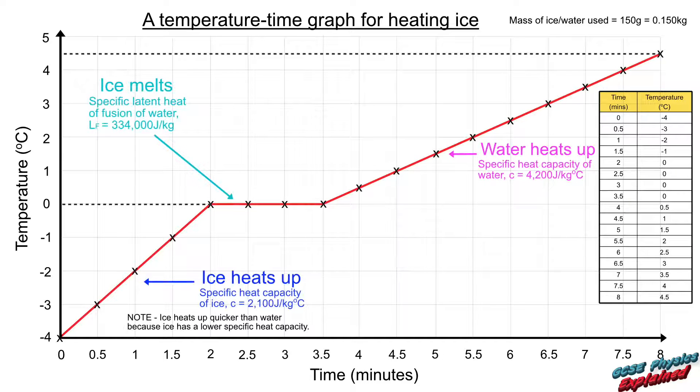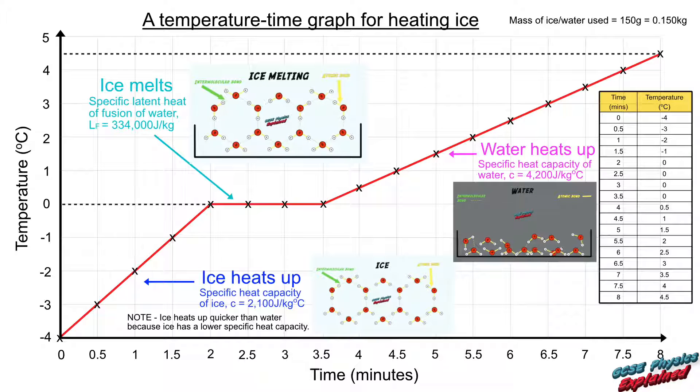Here's what the temperature time graph used in the model results should look like. Can you explain the three different sections of the graph using ideas about kinetic theory? Pause the video and give it a go.